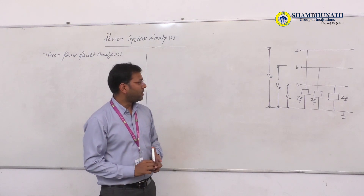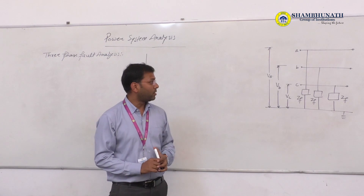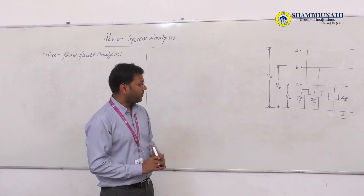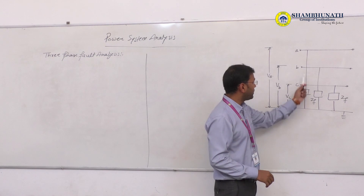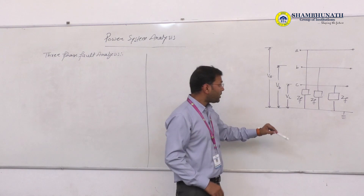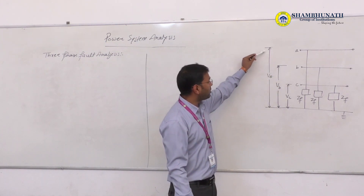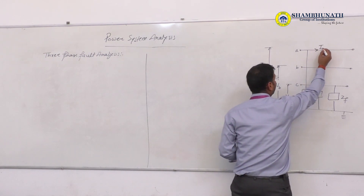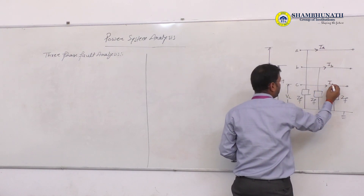We are now coming to the next fault known as 3-phase fault analysis. It is also a particular type of fault. Here are the three-phase lines A, B, and C. The fault impedances ZF are connected across lines A, B, and C respectively. The potentials across C is VC, across B is VB, across line A is VA, and the currents in lines A, B, and C are denoted by IA, IB, and IC.